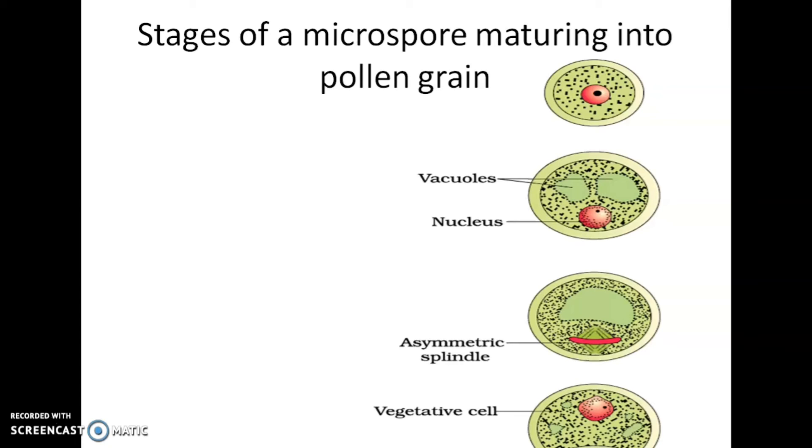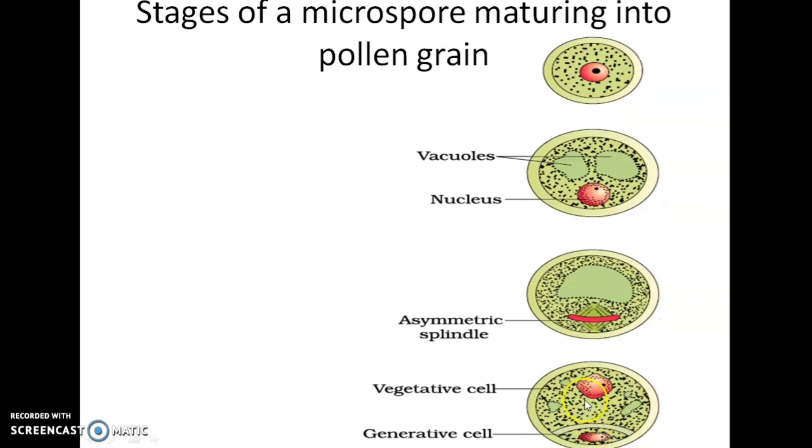Exine has prominent apertures called germ pores where sporopollenin is absent. Pollen grains are well preserved as fossils because of the presence of this sporopollenin. The exine exhibits a fascinating array of patterns and designs. The inner wall layer is intine, thin and continuous, made up of cellulose and pectin. The cytoplasm of pollen grain is surrounded by a plasma membrane. When the pollen grain is mature, it contains two cells: a vegetative cell and a generative cell.